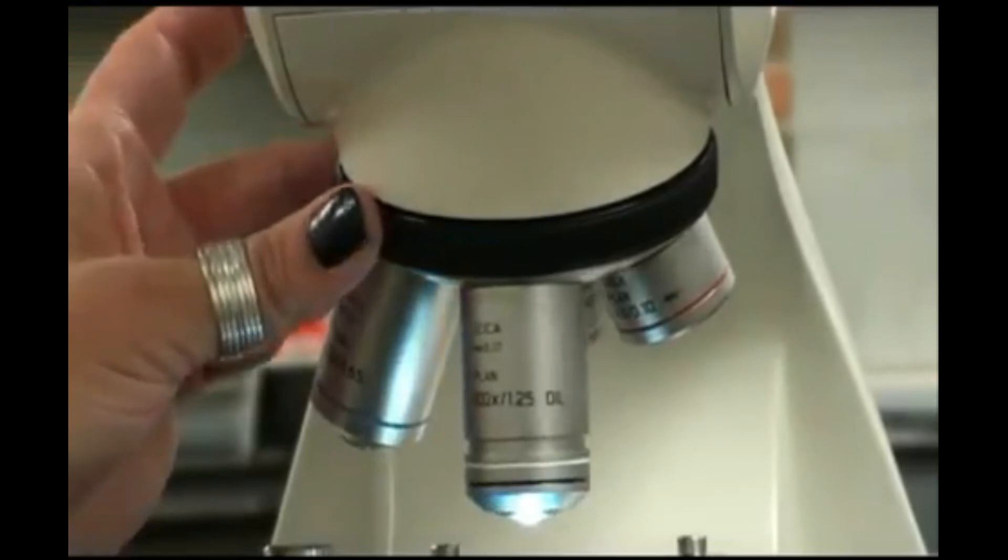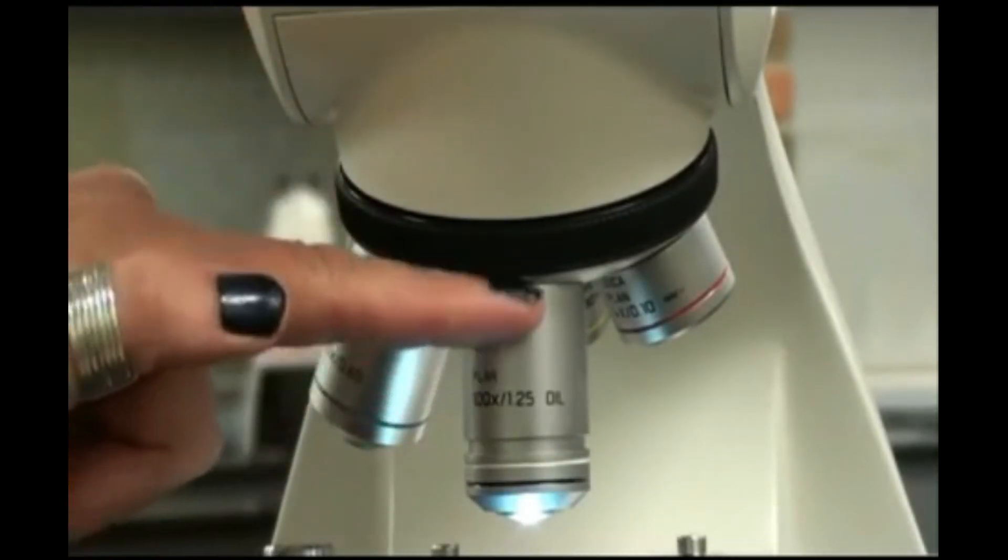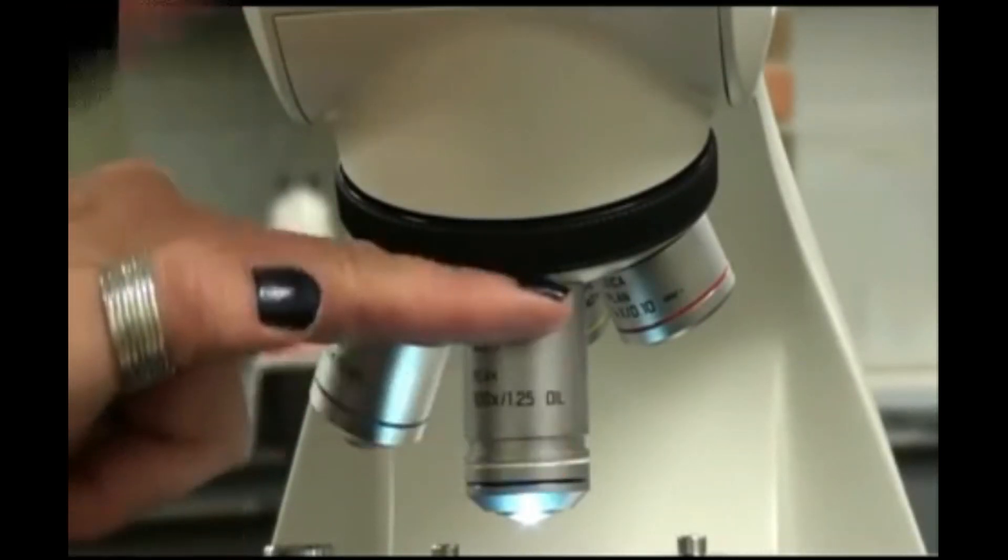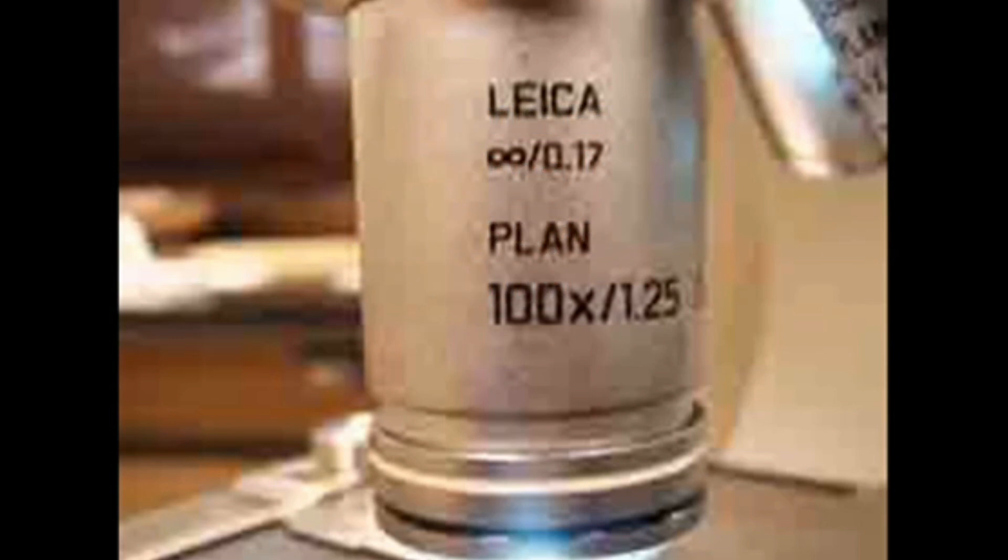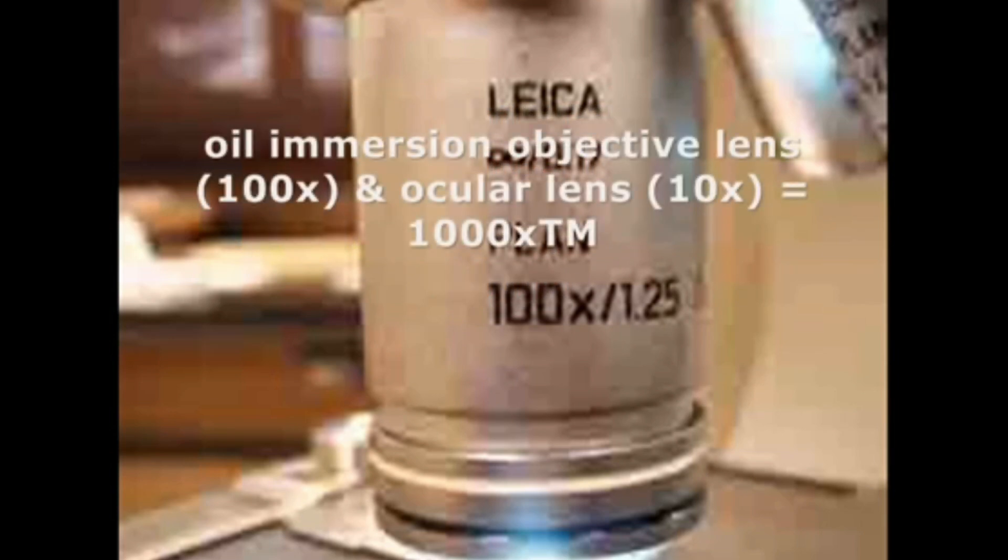Compound microscopes typically have three or four objective lenses. If you do have a fourth lens, that would be the oil immersion lens. It has a black and white band around it. It magnifies objects a hundred times actual size. So together with that ocular lens of ten times magnification, I can get a total magnification with oil immersion of one thousand.